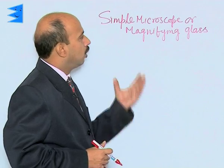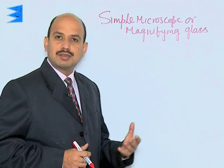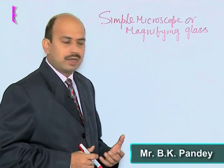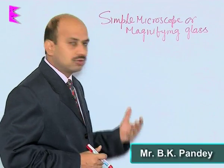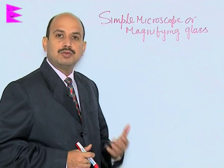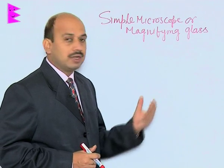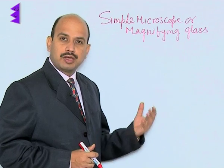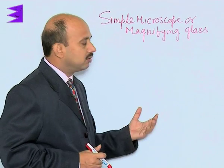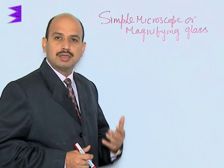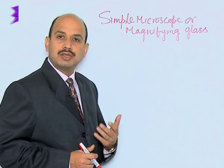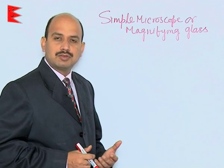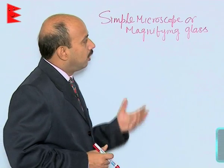See here, simple microscope or magnifying glass - this is also one of the optical instruments and a very simple one. Everybody uses this: in old ages people used it for reading newspapers, watchmakers use it for repairing watches, and it is also used by students in the laboratory for taking readings, like in vernier calipers or in a screw gauge.